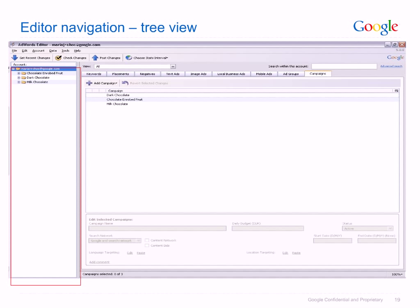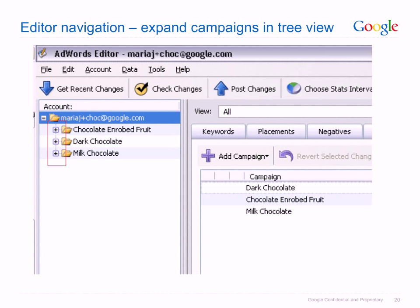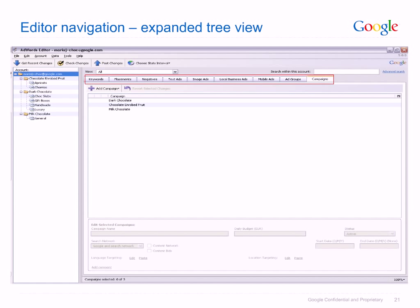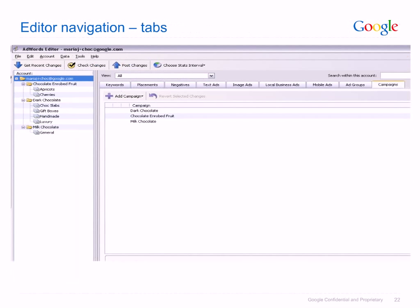Within the AdWords Editor user interface on the left-hand side, you will see a view which mirrors the campaign structure of your AdWords account. Details of these campaigns can be seen by clicking on the plus box and expanding the view. When viewing the expanded account, use the tabs to navigate between views of keywords, placements, text ads, etc. When selecting the root folder of an account in TreeView, the tabs highlighted here allow you to browse through each type of content in your campaign.